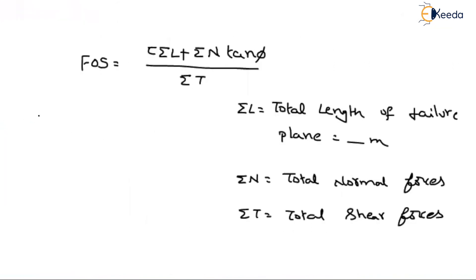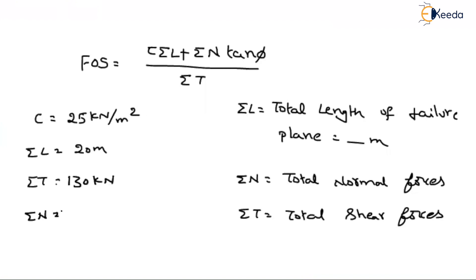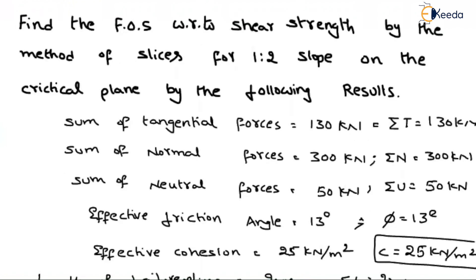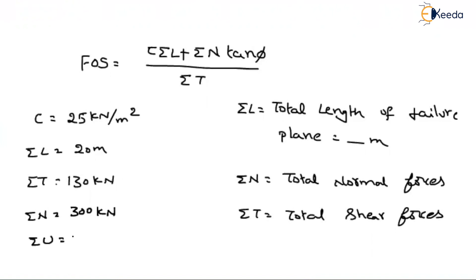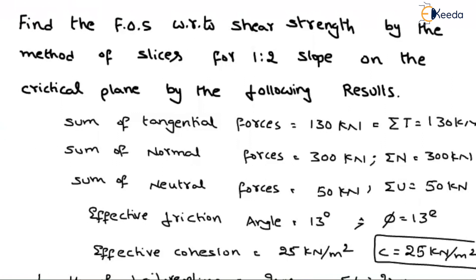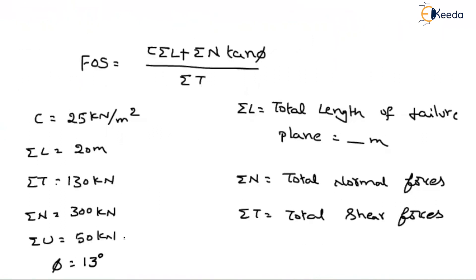Recalling those values: C equals 25 kilo Newton per meter square, summation of L equals 20 meters, summation of tangential forces equals 130 kilo Newton, summation of normal forces equals 300 kilo Newton, summation of neutral forces or pore water pressure equals 50 kilo Newton, and shearing angle is 13 degrees. Since pore water pressure is present, the soil may be under submerged condition. In that case, we must take effective values, so the friction angle is represented as φ′ (phi dash).